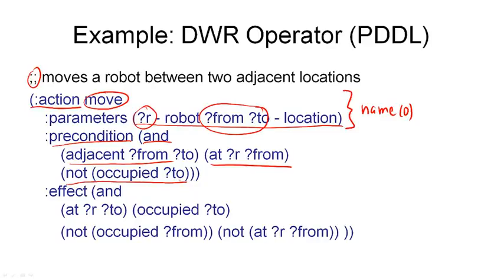Similarly, the effects are listed as a conjunction. They correspond to the same four effects seen previously: the robot is at the destination location M, location M is occupied, the robot is no longer at the source location, and the source location is no longer occupied. You should now be able to express the other two operators in PDDL notation — try that as an exercise.